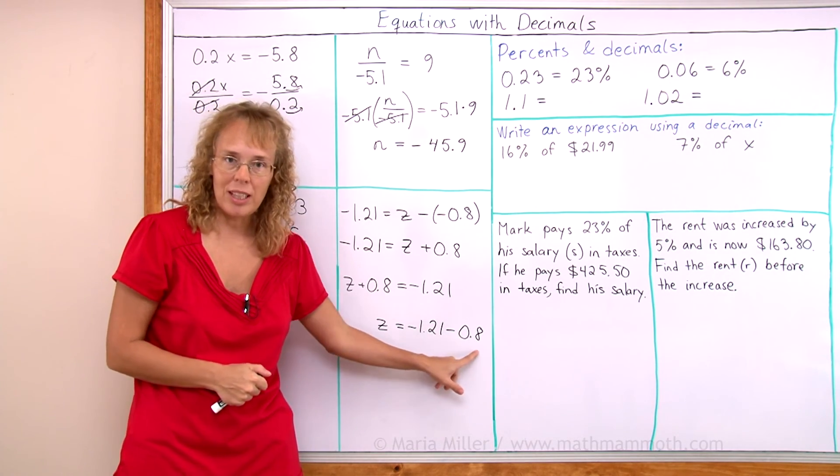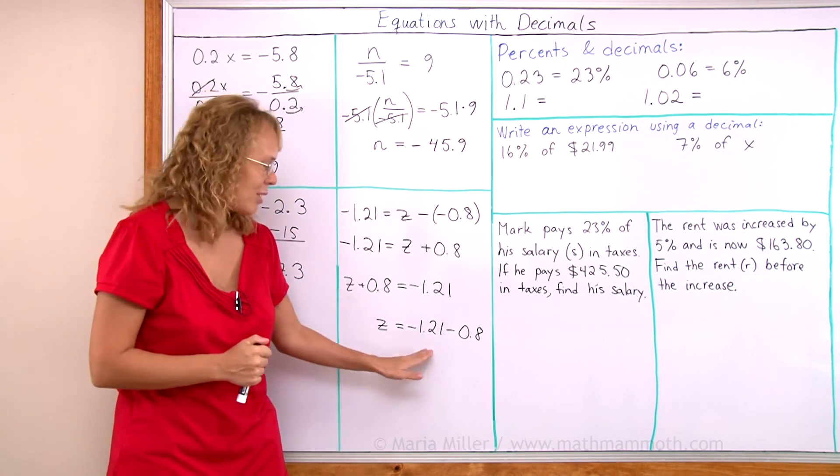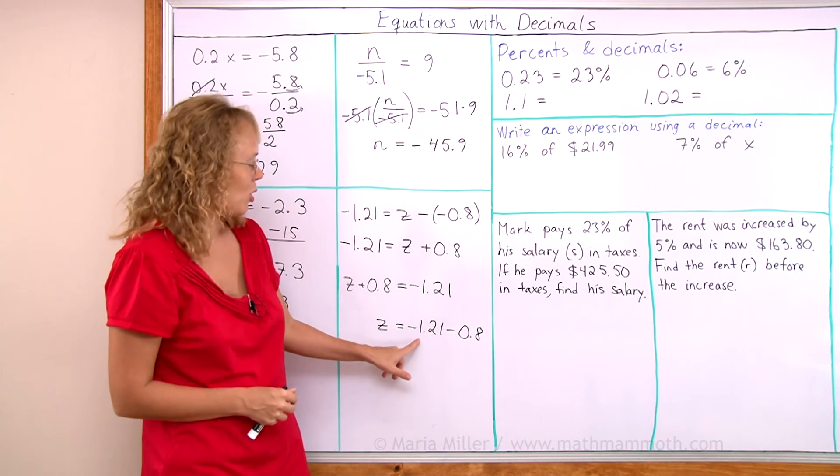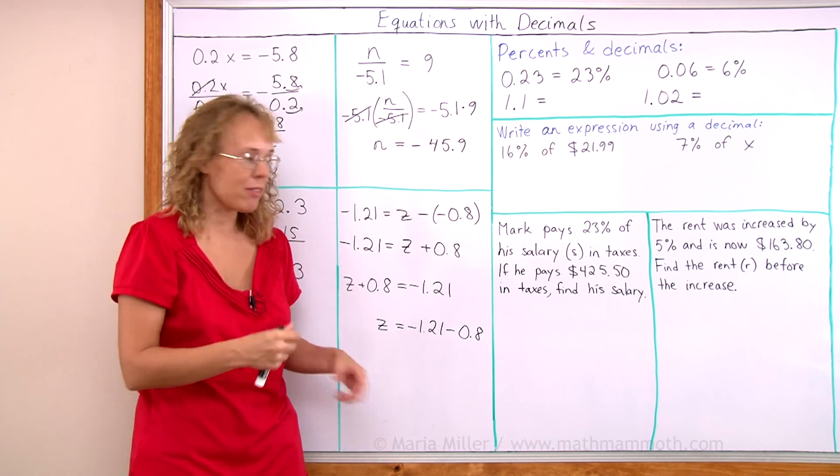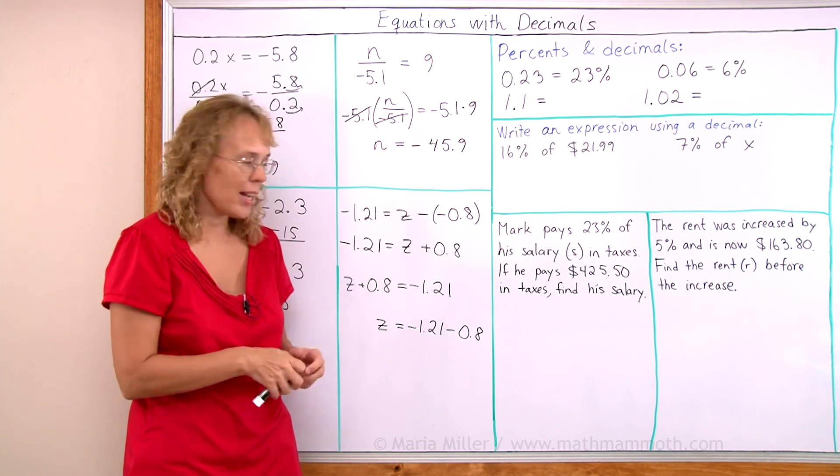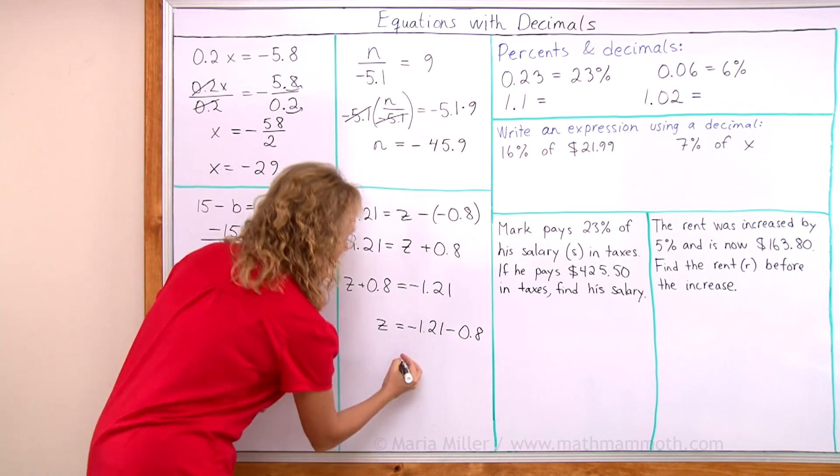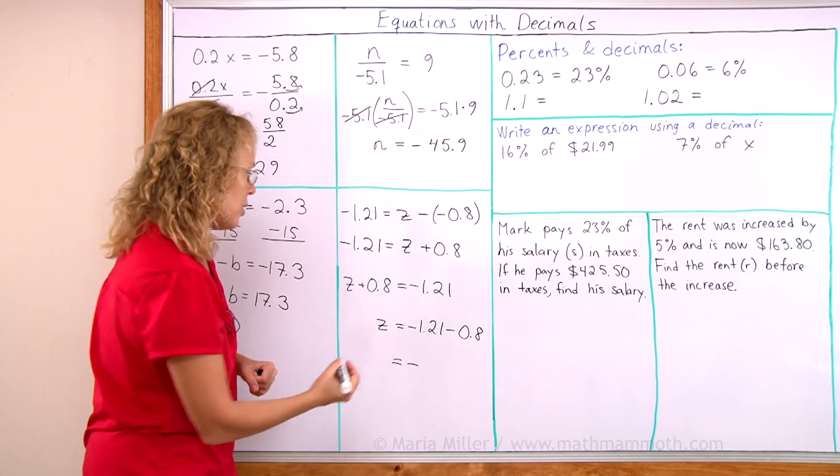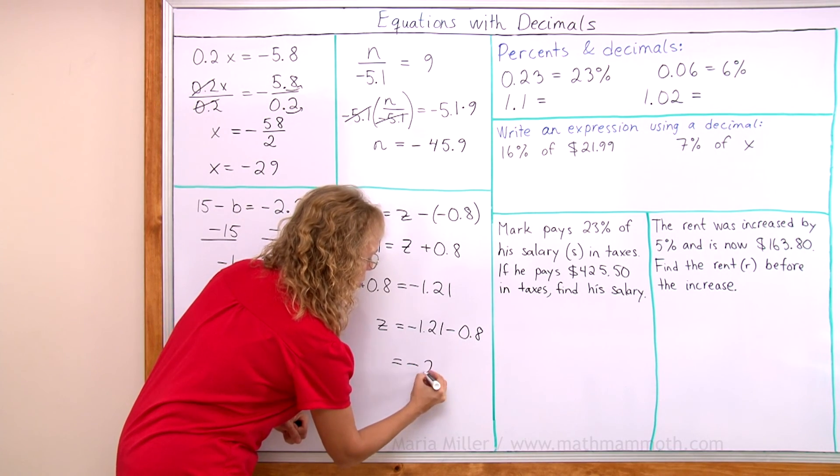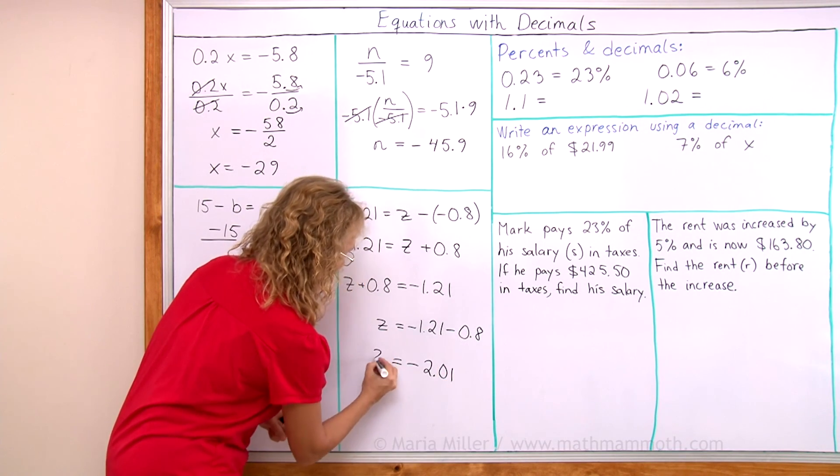So a negative number and you subtract some more. Again it just makes it more negative. So I add the absolute values. 1.21 plus 0.8. And I take the sum as negative. So we actually get negative 2.01.